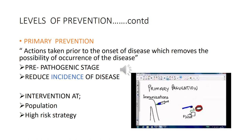The second level of prevention is primary prevention. In primary prevention, actions are taken before the onset of disease and remove the possibility that the disease will ever occur. It signifies intervention in the pre-pathogenic phase of a disease or health problem. Primary prevention can be accomplished by measures designed to promote general health and well-being, improve quality of life, or by providing specific protective measures.